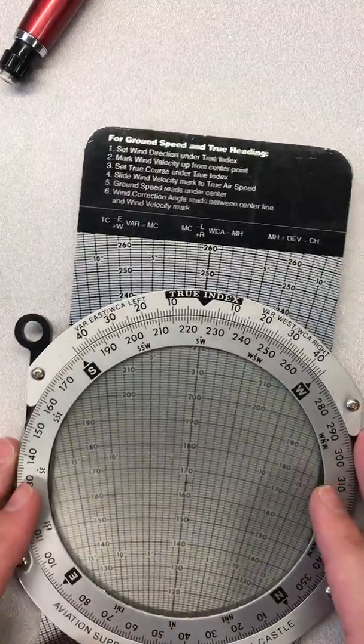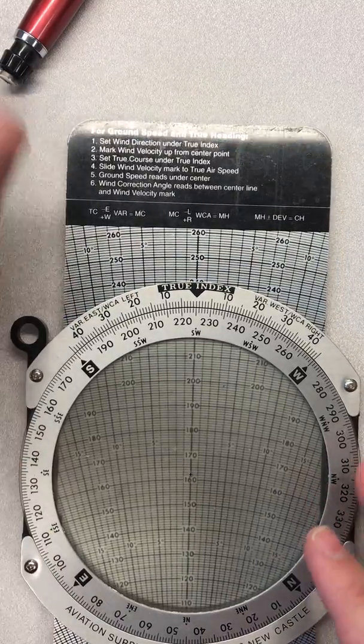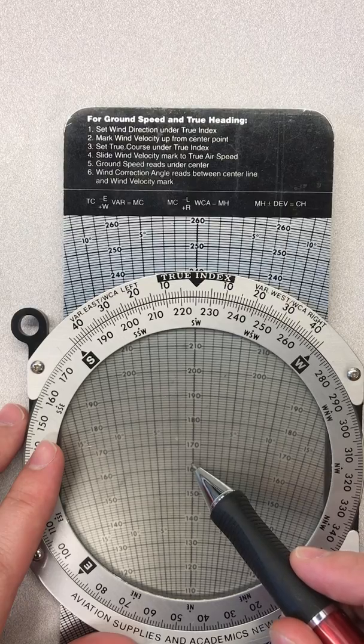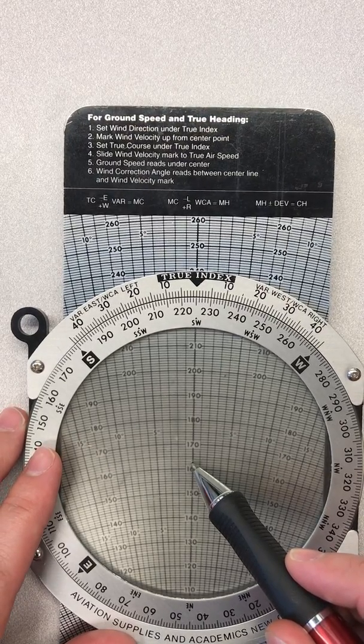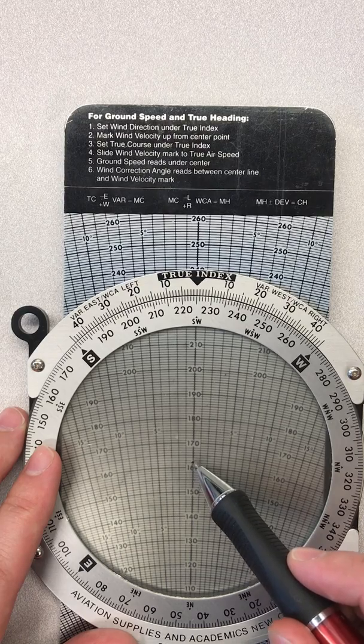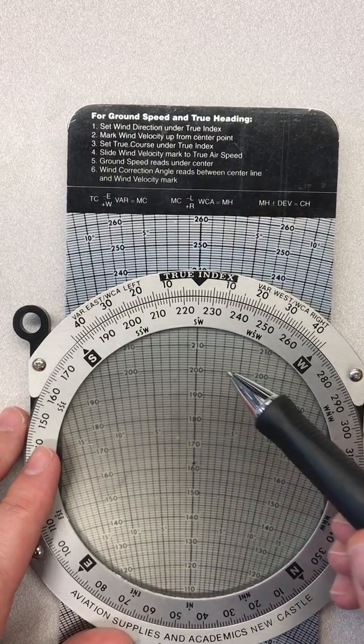How do we do this with the wind side of the E6B? We've got instructions up top and we'll just go step by step. Another thing to note before we begin: in the center of our instrument here is a hole, and that's going to be what they refer to as the center. When it says center, this is what it means.